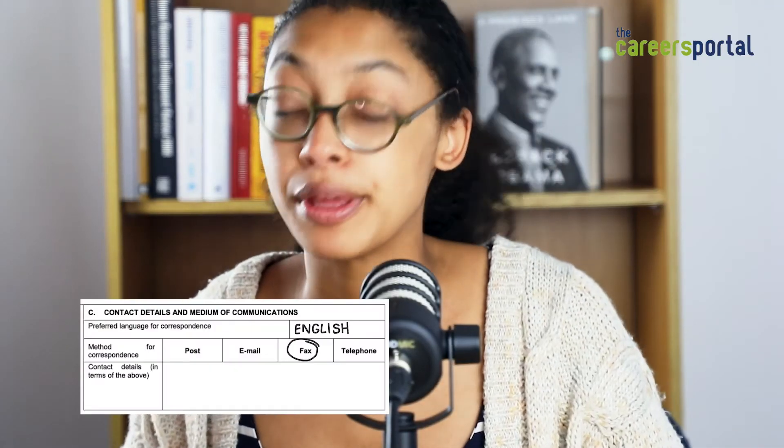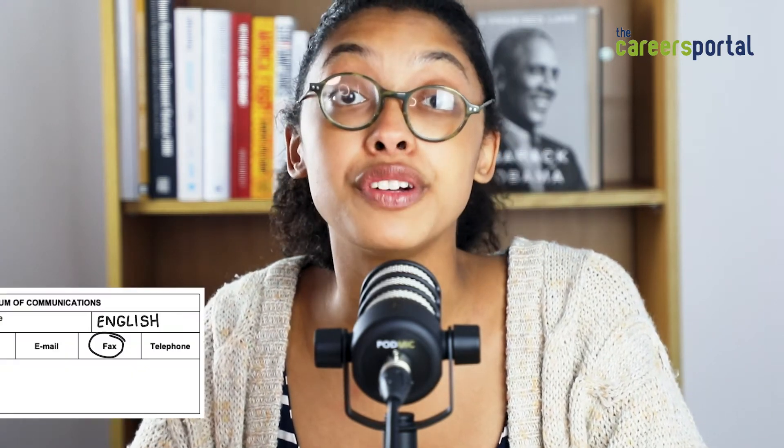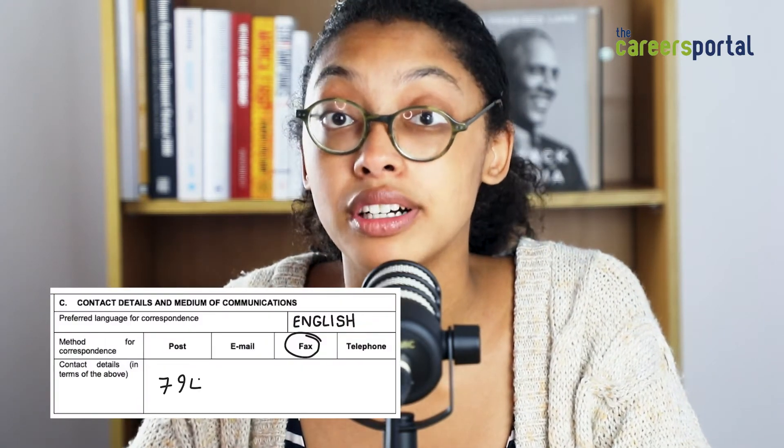For section C, circle which method of correspondence you'd prefer to use for communicating. Under contact details, if you circled post you need to fill in your postal address. If you circled email, fill in your email address; for fax, fill in your fax number; and for telephone, fill in your telephone number.